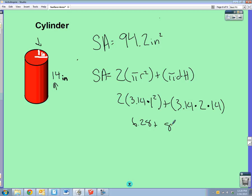You add those together, and we get 94.2 square units. And that's how we find the surface area of that cylinder.